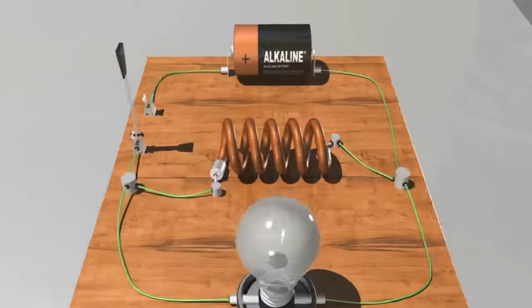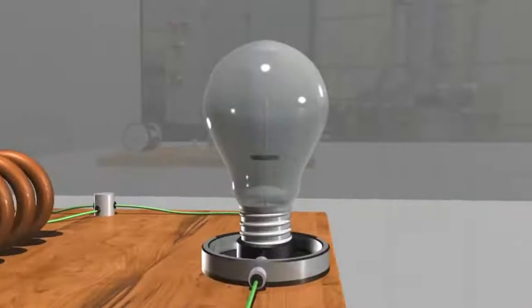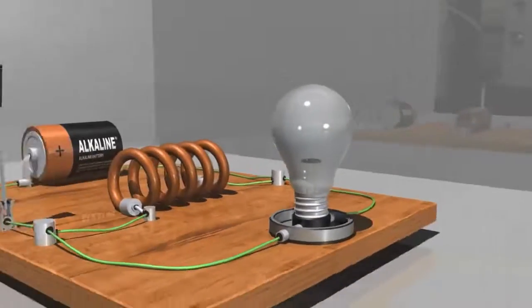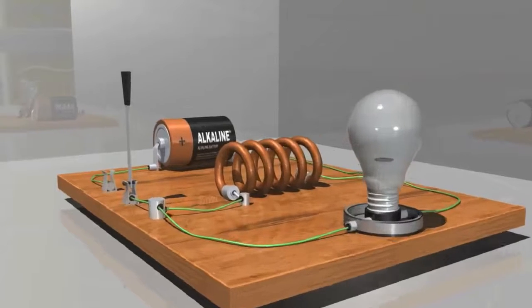Here is a simple circuit featuring a battery, a knife switch, and a light bulb. This circuit also contains a wire coil that serves as an inductor.